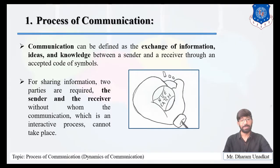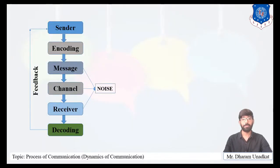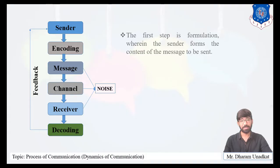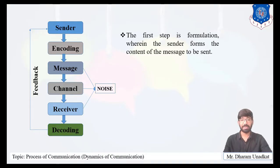Now let's understand the communication cycle, which involves various elements: sender, encoding, message, channel, receiver, and decoding. The first step in the process of communication is formulation, wherein the sender forms the content of the message to be sent.